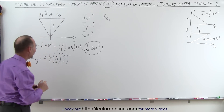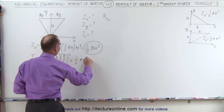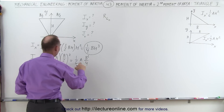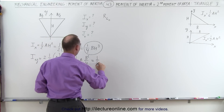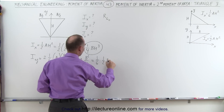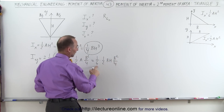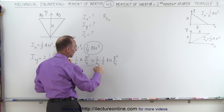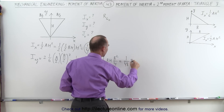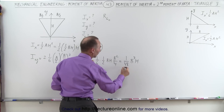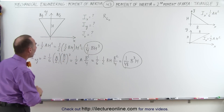Now let's simplify that. This becomes equal to 1/6 the area times b squared over 4. The area is 1/2 base times height, so this becomes 1/6 times 1/2 times the base times the height times b squared divided by 4. Multiplying all this out, we get 1/48 b cubed times h. This is the moment of inertia of that triangle relative to the y-axis.